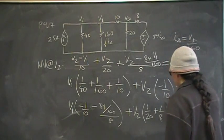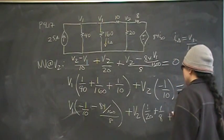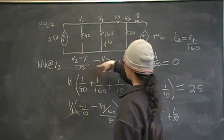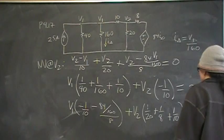And then plus V2, 1 over 20, plus 1 over 8, plus 1 over 10. That one there. 1 over 10, 1 over 20, 1 over 8, that's equal to 0.